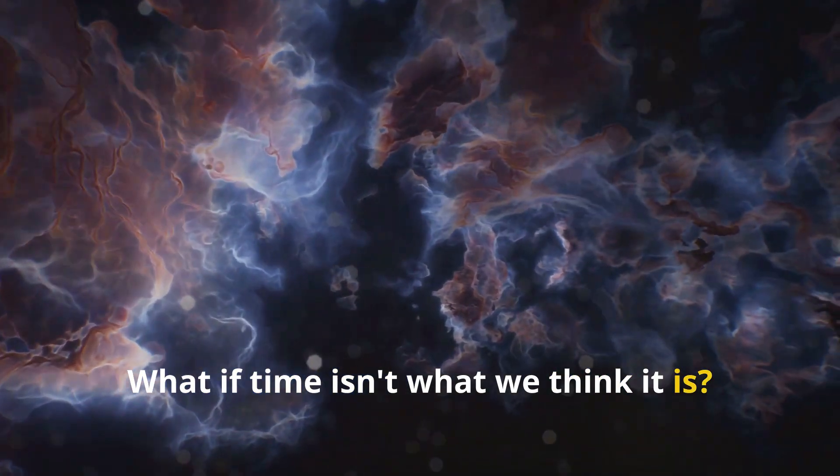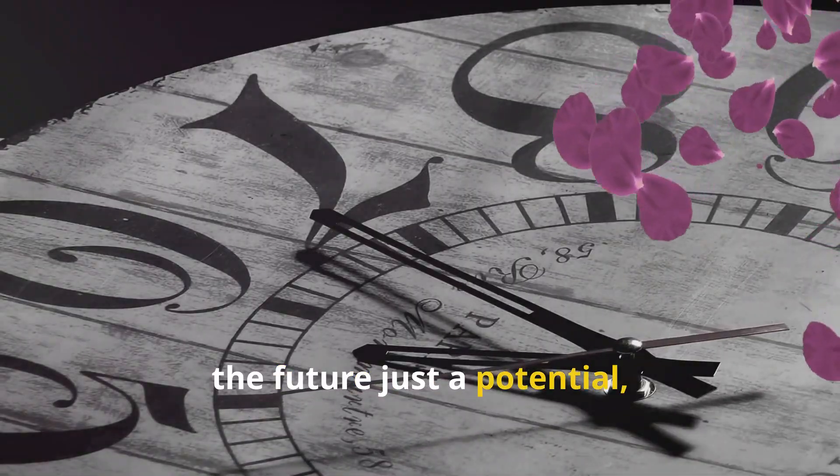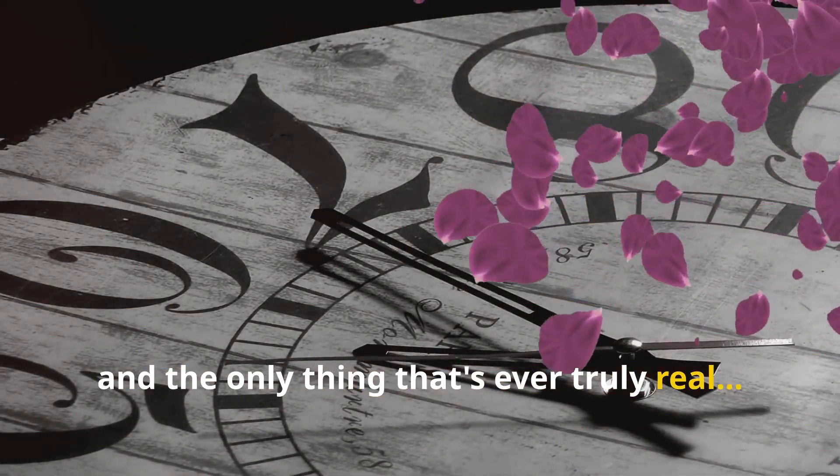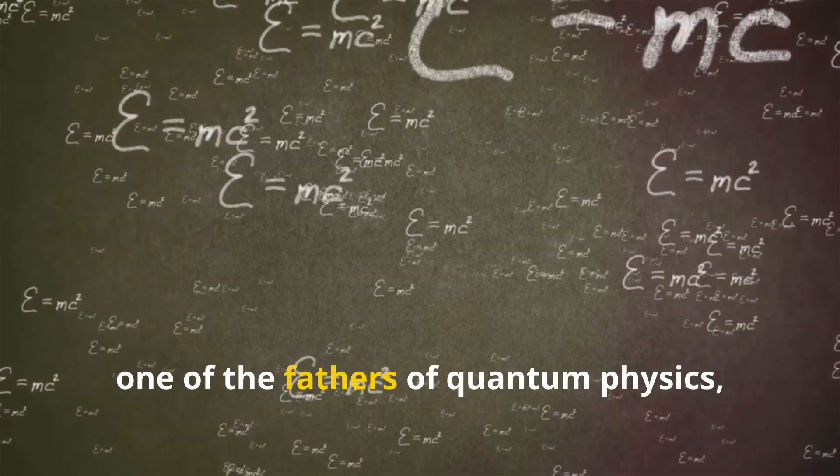What if time isn't what we think it is? What if the past is just a memory trace, the future just a potential, and the only thing that's ever truly real is now? Erwin Schrödinger, one of the fathers of quantum physics, believed time was not an absolute river flowing from past to future, but a mental construct, a way consciousness organizes change.